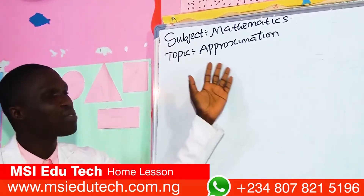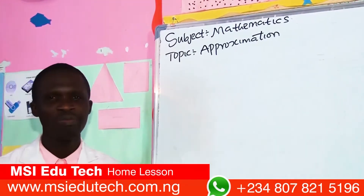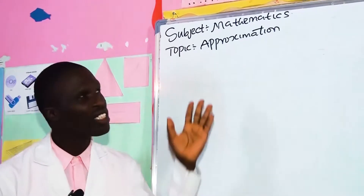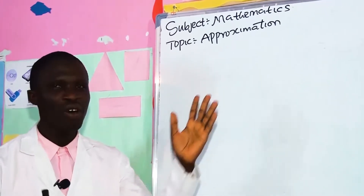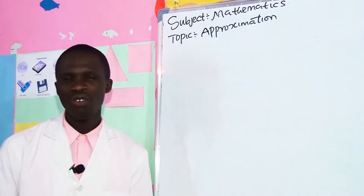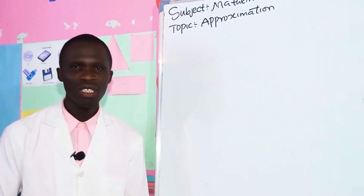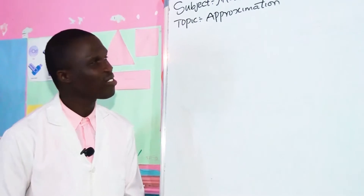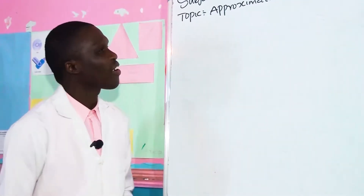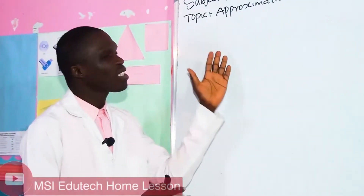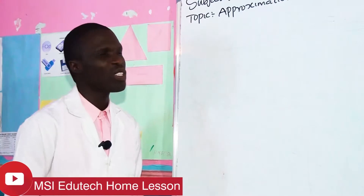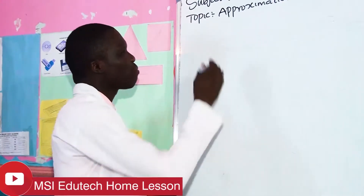Okay, now let's go straight to the topic of today. Today we'll be considering approximation. I know you've seen this word before — it might look familiar — but we are going to dig deep into it. What is approximation? Approximation is the rounding of numbers.